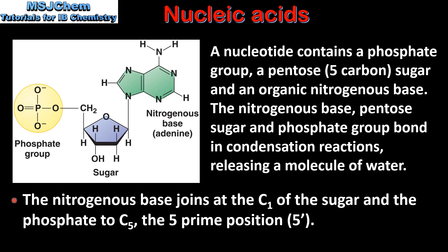The nitrogenous base joins at carbon number 1 of the sugar and the phosphate joins at carbon number 5, which is known as the 5' position. So on this diagram we can see that the nitrogenous base is bonded to carbon number 1 and the phosphate group is bonded to carbon number 5. Both bonds are covalent bonds which are formed in condensation reactions in which a molecule of water is produced.